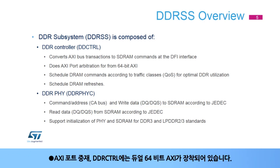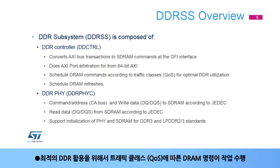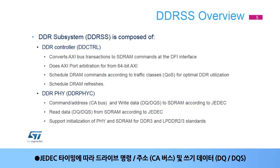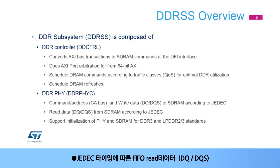AXI port arbitration — DDRCTRL is equipped with dual 64-bit AXI. It schedules DRAM commands according to traffic classes, or QoS, for optimal DDR utilization, and schedules DRAM refreshes. The DDRPHYC is in charge of driving the command address, or CA bus, and write data, DQ or DQS, according to JEDEC timing. It also FIFOs read data, DQ or DQS, according to JEDEC timing.